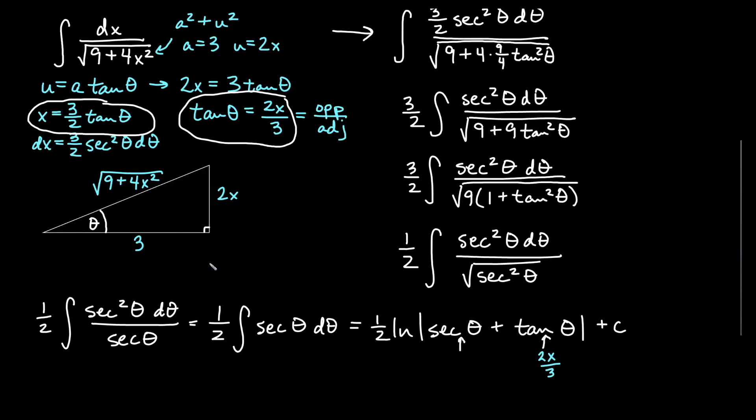And secant theta, remember that secant is the reciprocal of cosine, so the hypotenuse is on top and the adjacent is on the bottom. That gives us the square root of 9 plus 4x squared on top, and our adjacent is 3.